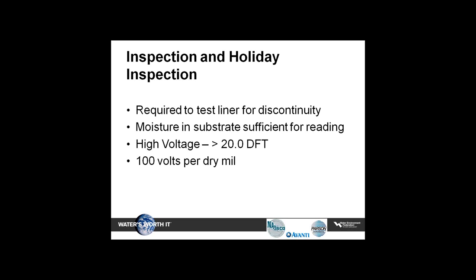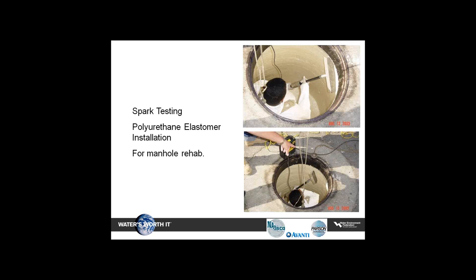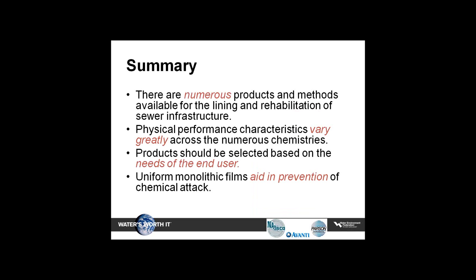When it comes to holiday inspection, I bring this up as a safety note. When talking about thick mill coatings — anything over 20 mils — you have to have 100 volts per mil, so we're talking about high voltage. Just be safe when using these tools. In summary, there are numerous products and methods available for lining and rehabilitation of sewer infrastructure. Physical performance characteristics vary greatly across various chemistries. Products should be selected based on the needs of the end user, and uniform monolithic films definitely aid in the prevention of chemical attack.